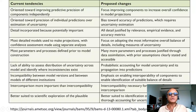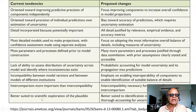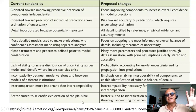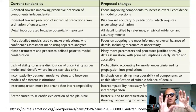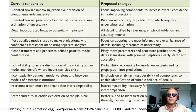Currently, the most detailed models are used to make projections, with confidence assessments made using separate analysis. The proposed changes focus on adopting the most informative overall balance of details, including measures of uncertainty. For example, current models are better suited to scientific exploration of the plausible — looking at a phase space where all these feedbacks give a range of outcomes — whereas the proposed changes focus on identification of the probable, with more thorough accounting of uncertainty.